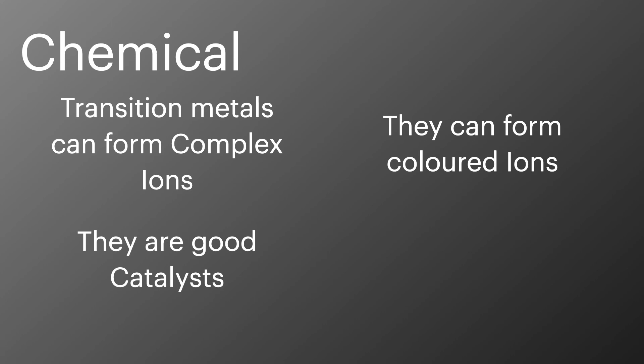They also make great catalysts, speeding up many of the really important industrial processes. And finally, they have variable oxidation states. We learned about oxidation states in the year one topic we learned about redox. Transition metals are able to have more than one oxidation state, which gives them some of their unique chemical properties.